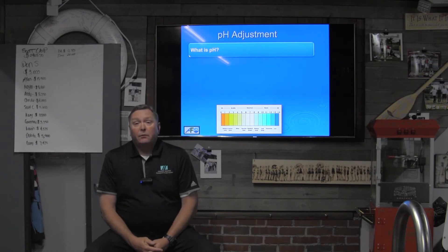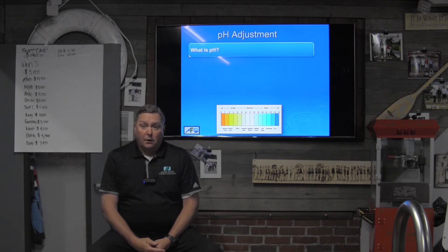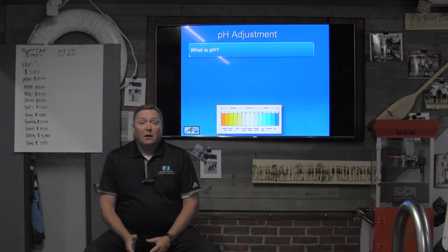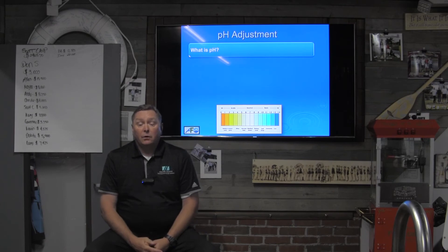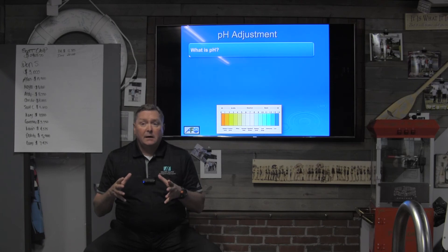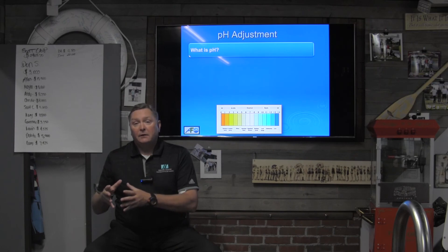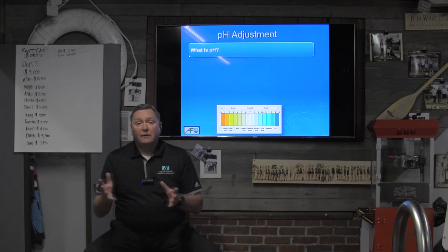Conversely, for those using muriatic acid or sodium bisulfate for their pH control, that will naturally knock the alkalinity out of the water. As your total alkalinity begins to fall into the 50 parts per million range or lower, it becomes very difficult to hold the pH at 7.4, 7.5, or 7.6, because a little bit of this and a little bit of that has a great deal of effect on pH when the alkalinity is really low. So keeping your total alkalinity in an acceptable range is key to controlling pH.